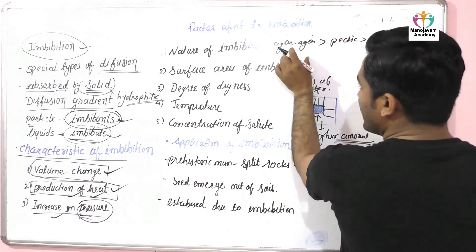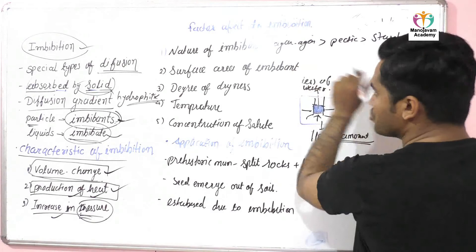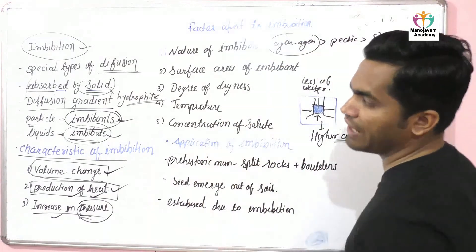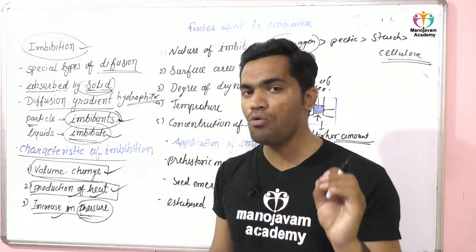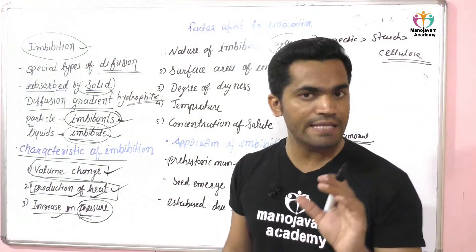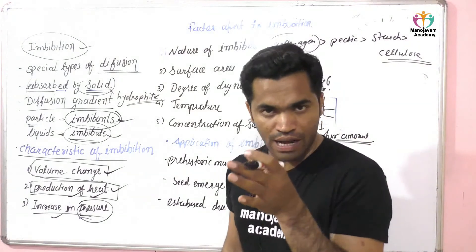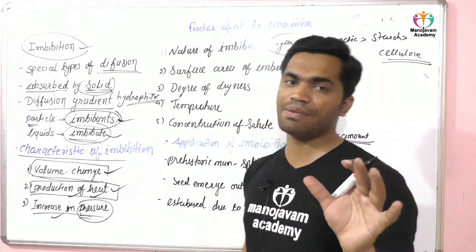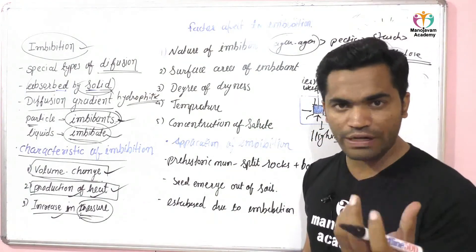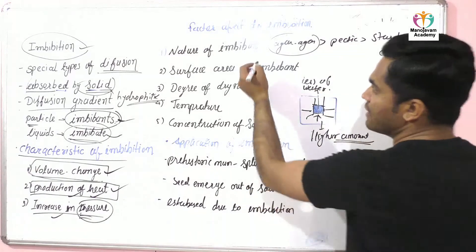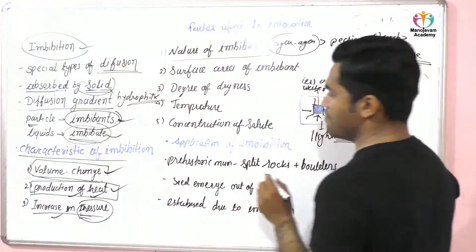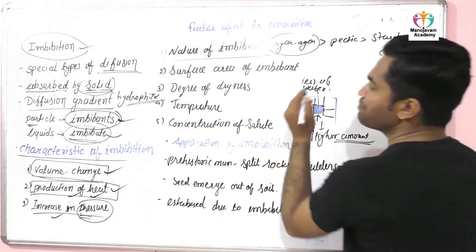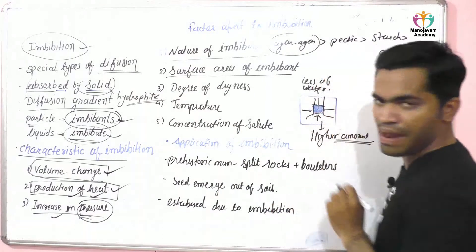Starch has a higher imbibition ratio as compared to cellulose. So agar-agar has the highest capacity for imbibition. In terms of biomolecules, protein has a higher imbibition capacity as compared to carbohydrates, and cellulose and lipids have a lower amount of imbibition capacity. So the nature of the imbibant affects the imbibition process.